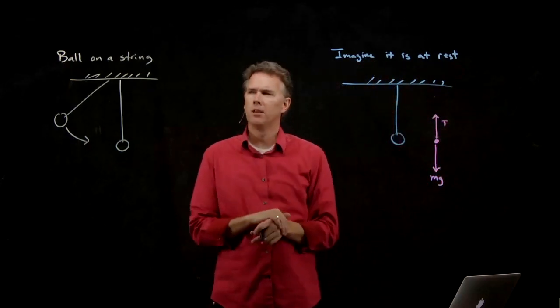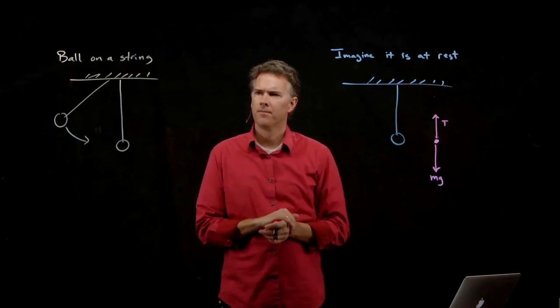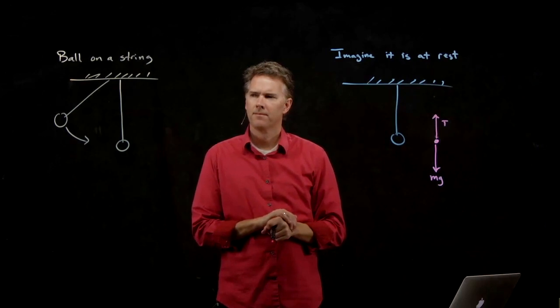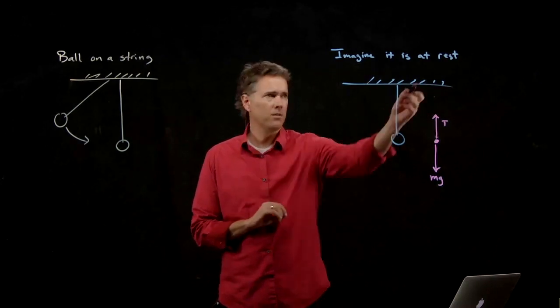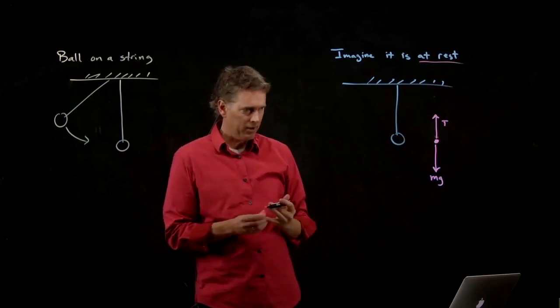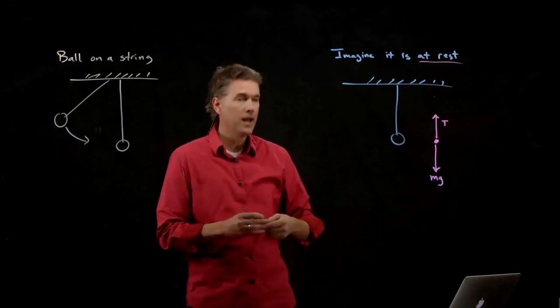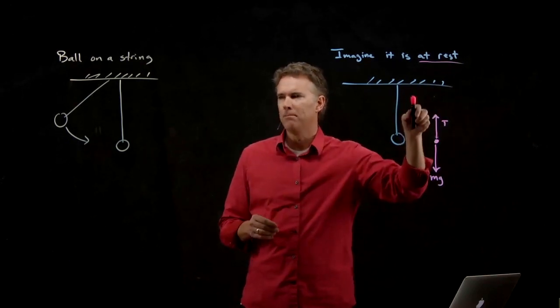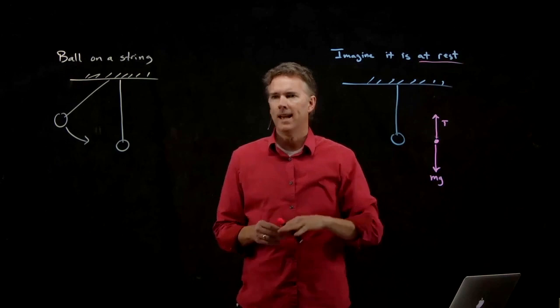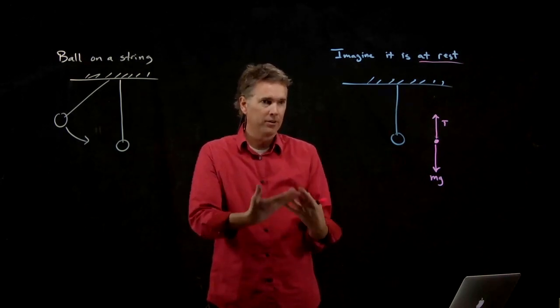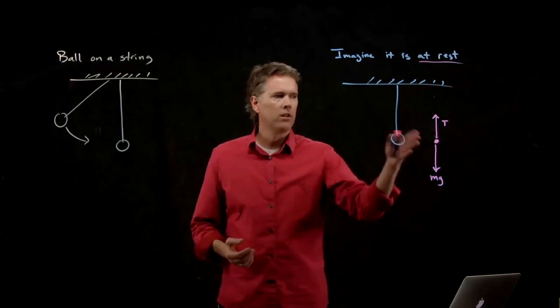You said it's got to be equal in length to mg. Why does it have to be equal in length to mg? Because the ball's at rest. If it's at rest, there's zero acceleration, and so the forces have to exactly balance. Up has to balance with down. We can't have any net force because if we have a net force, we will have acceleration.